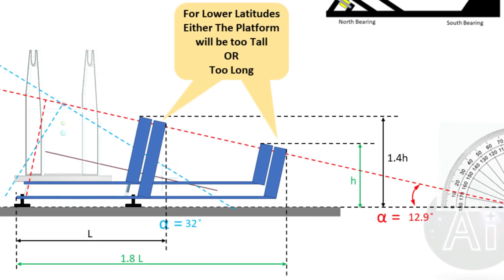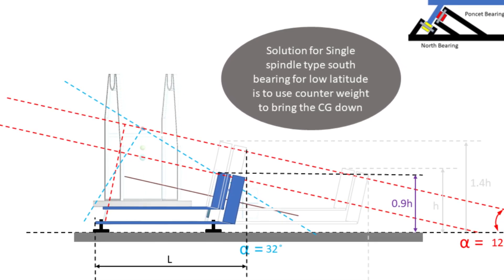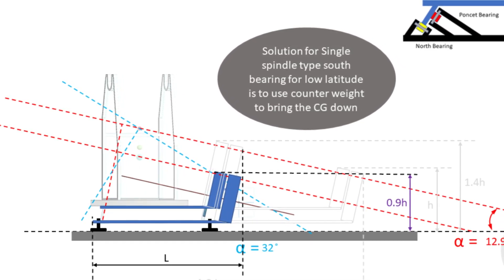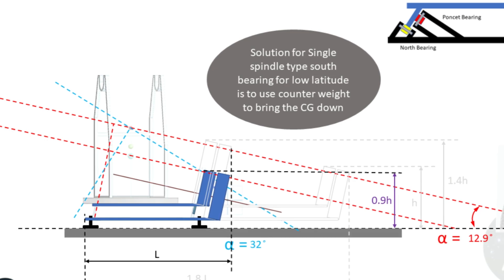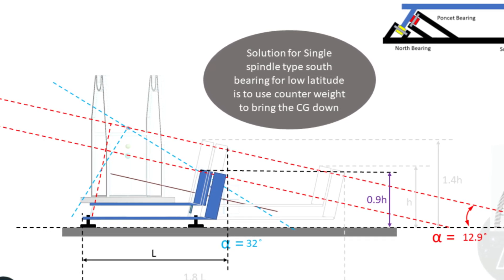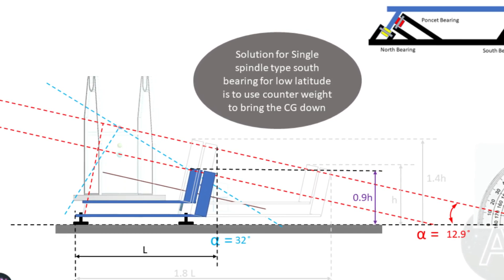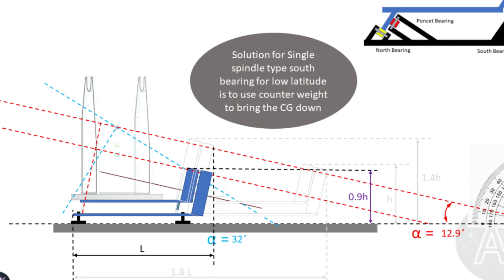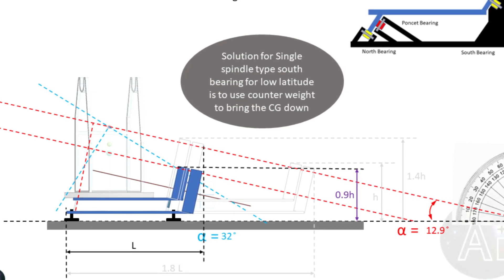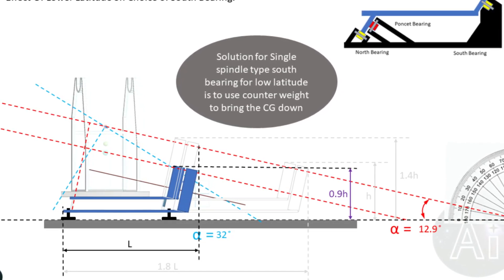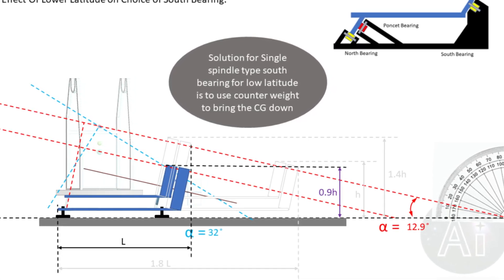So what is the solution? Because of various constraints, if you want to stick to a single spindle type of south bearing, the only solution to reduce the size of the equatorial platform is to lower the center of gravity by adding additional weight. So you can see if you do that in our case, let's say you want to pass now the polar axis through a center of gravity with 15 kilogram of counterweight, the height difference that you get for the same length of equatorial platform is from 1.4 times the height to 0.9 times the height.